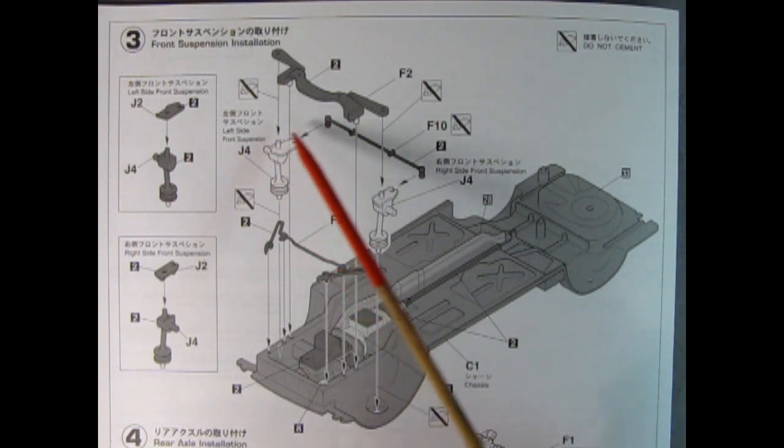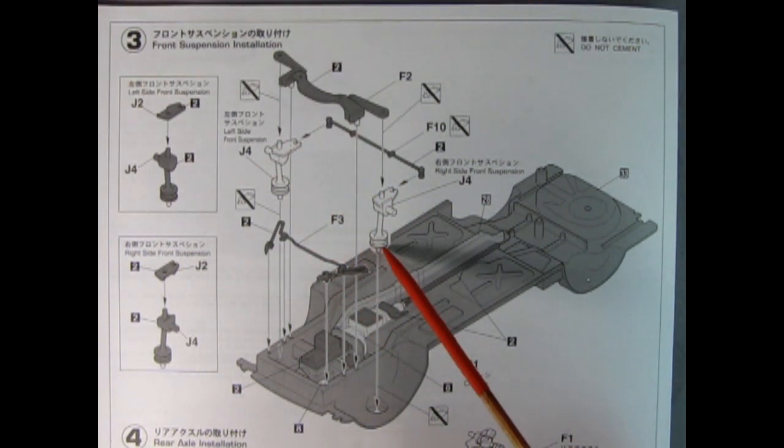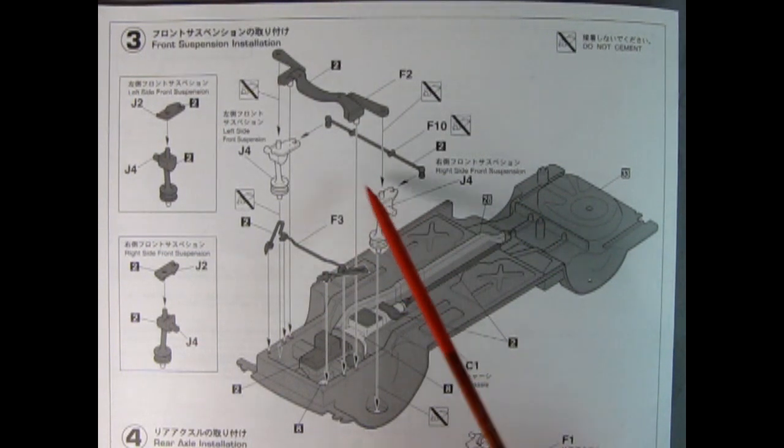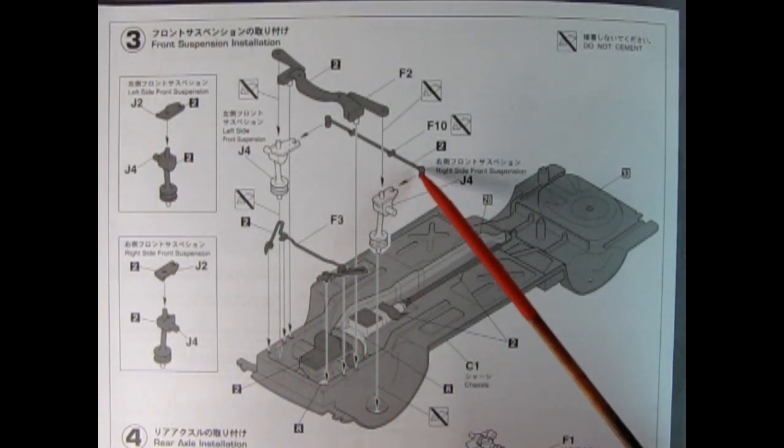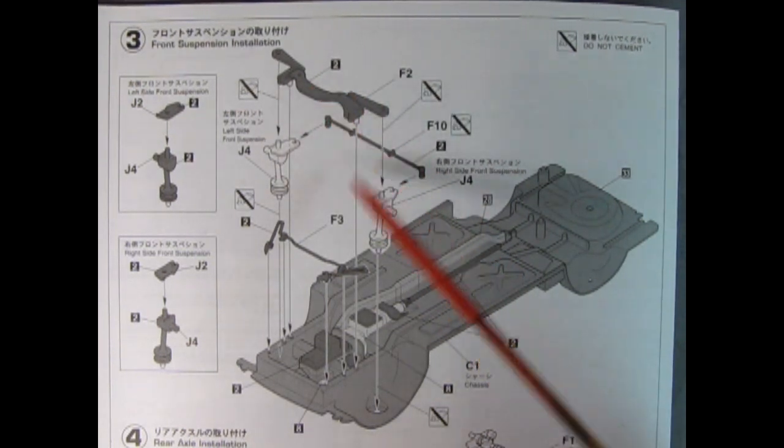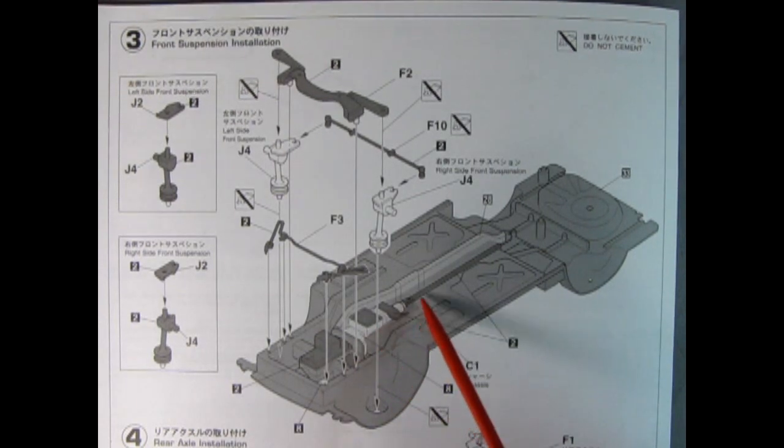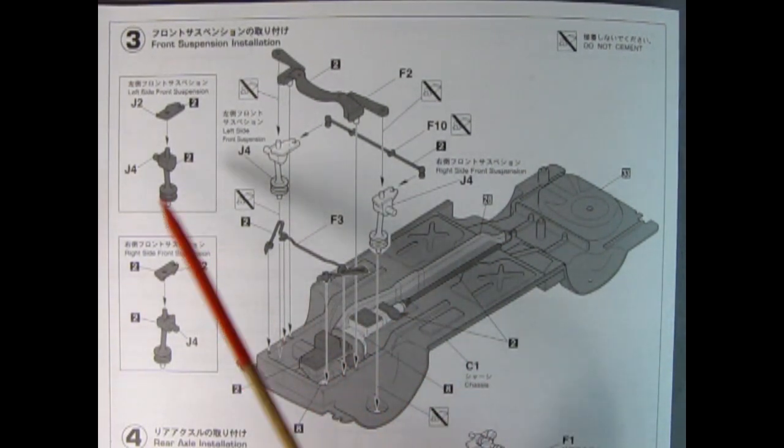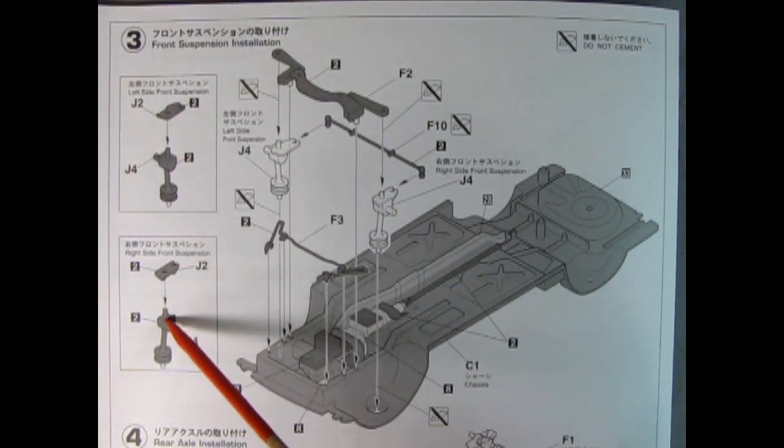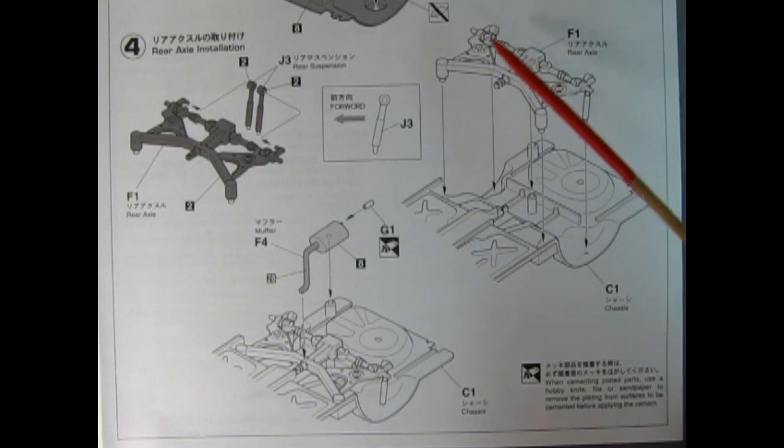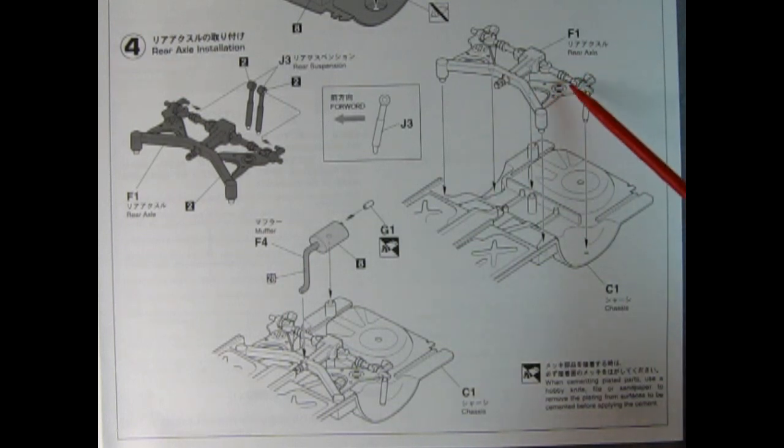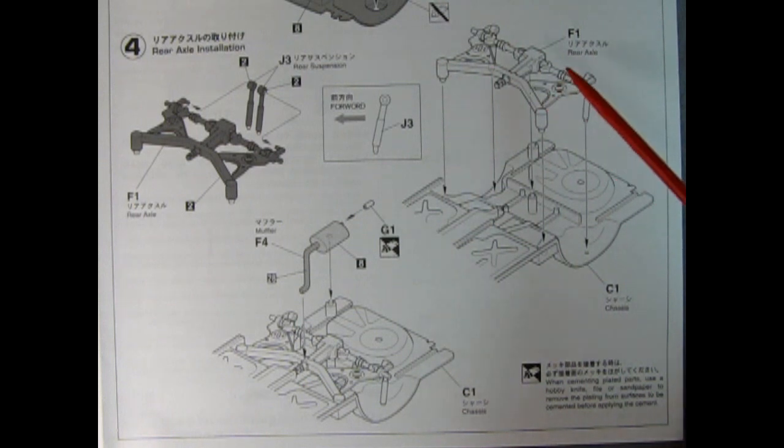One thing we did see underneath is that this Datsun 510 copied the British style suspension from like a Jaguar or something and it has an independent rear axle. Up front we have the McPherson strut mechanisms, so there's the spring and the shock absorber, and then down below you have the steering kingpins. Here's your rack and pinion steering and then there's this little subframe which drops in. In this kit the engine transmission and drive shaft are molded as one piece.